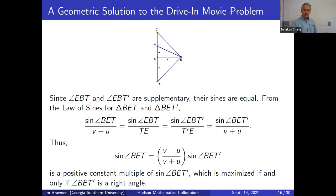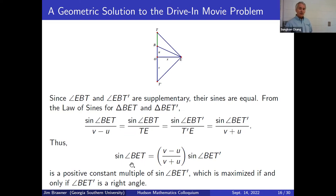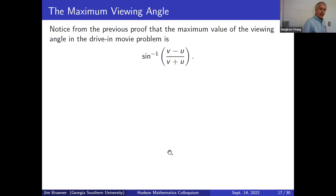We can also ask: can the maximum viewing angle be a rational multiple of π (e.g., π/6, π/4)? And can we have this simultaneously with x being an integer? We just found that the maximum value of sin(BET) is (v−u)/(v+u), so we need to know when that fraction's arcsin is a rational multiple of π.